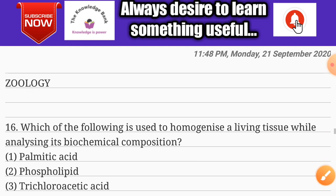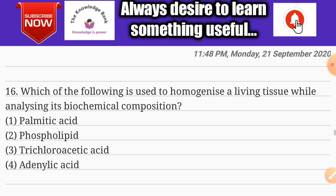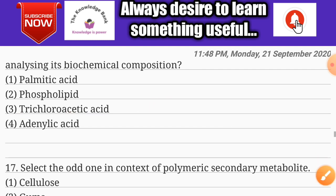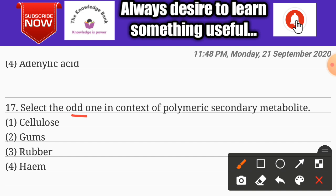Zoology question number sixteen: which of the following is used to homogenize a living tissue while analyzing its biochemical composition? Options are plasmatic acid, phospholipids, trichloroacetic acid, and adenylic acid. The correct answer is option three: trichloroacetic acid.